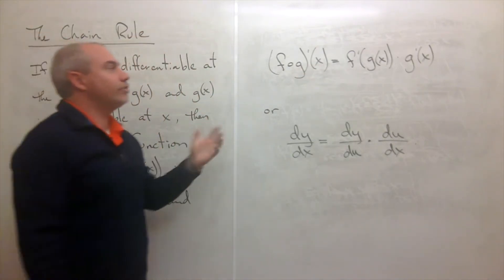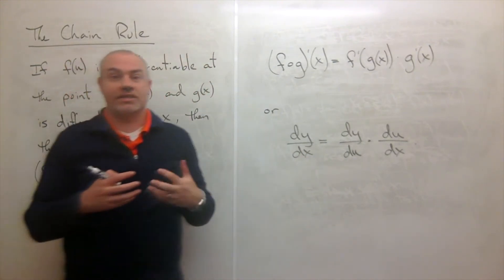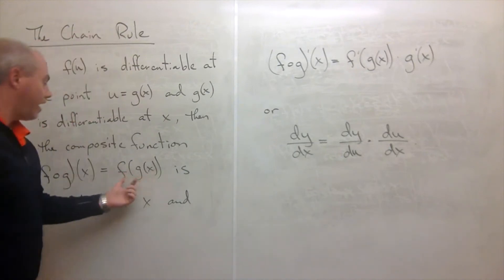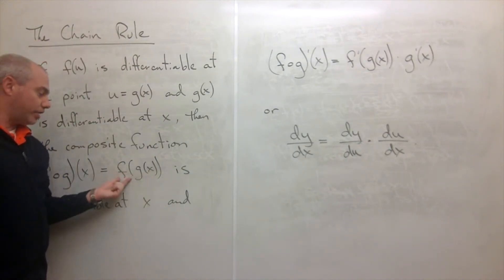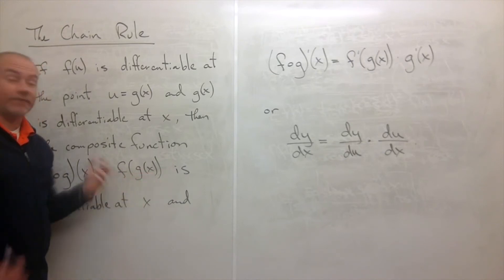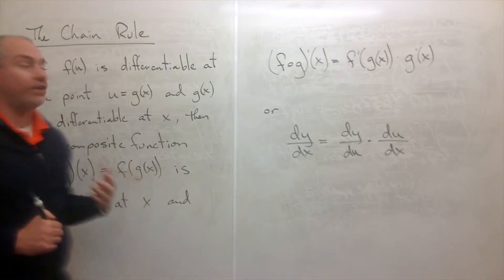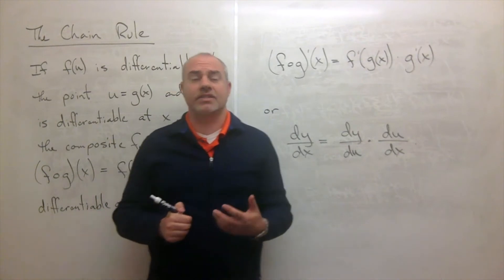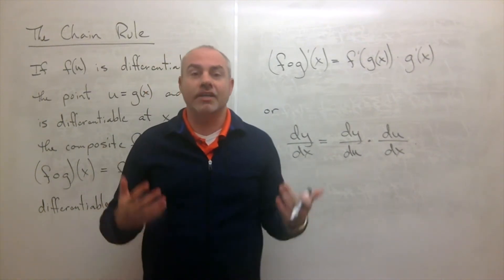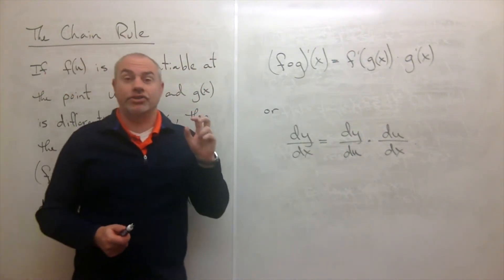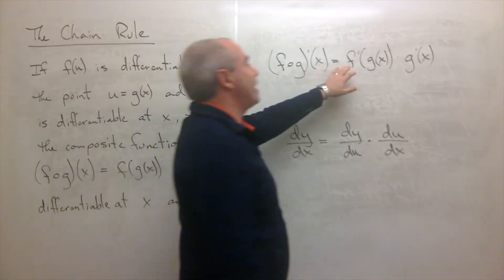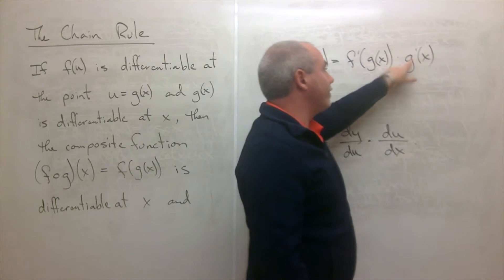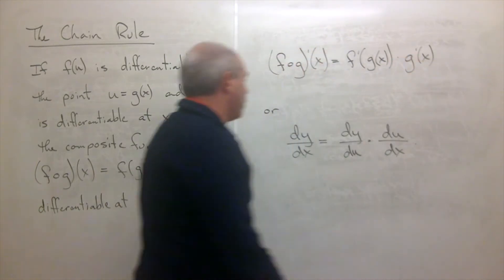To take the derivative of f composed with g of x, I take the derivative of f — the outside function — leaving the inside function g of x alone. You can see it's f of g of x, a function of a function. The outside function is the last thing the function is doing — think of it as what you'd do last when typing it into your calculator. Take the derivative of the outer function leaving the inside alone, then multiply by the derivative of the inside function.